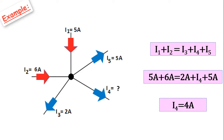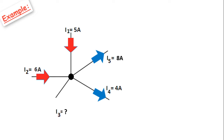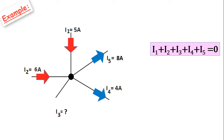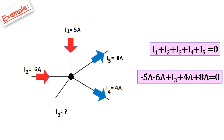Now let's do a slightly more difficult example. This time the unknown current I3 has neither a known value nor a known direction. How do we find the value and direction of this current? According to Kirchhoff's current law, the sum of the currents flowing into and out of a node is equal to 0. We can write: I1 plus I2 plus I3 plus I4 plus I5 equals 0. Writing incoming currents as negative and outgoing currents as positive, we can easily find the unknown current.